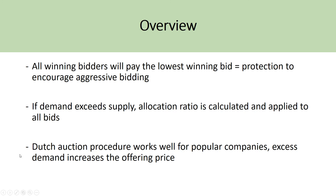The Dutch auction procedure works well for popular companies because excess demand increases the offering price, helping companies maximize the money raised from their shares. We saw this with Google, now Alphabet, and several other companies who used this procedure to maximize the value of their shares. On the other hand, for an unpopular company where supply exceeds demand, the Dutch auction can work against them — the lowest winning price may be significantly lower than what they could have received in a best efforts offering.